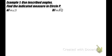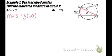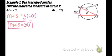Example 1: find the indicated measure in circle P. First, let's solve for the measure of angle S. Angle S is an inscribed angle and its intercepted arc is the 60-degree arc. So the measure of angle S is equal to half of 60 degrees, which is 30 degrees. I'll note that in the diagram in case it's needed later.